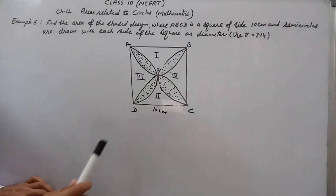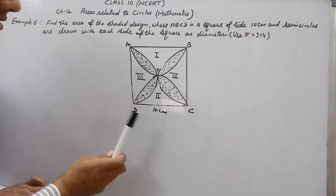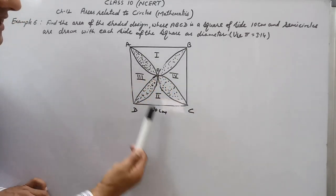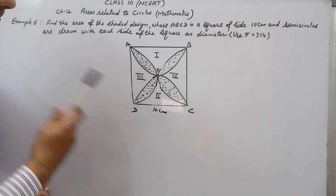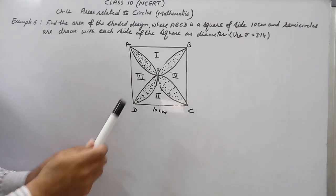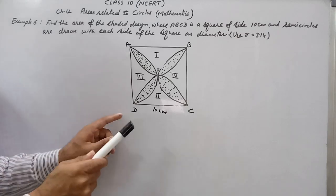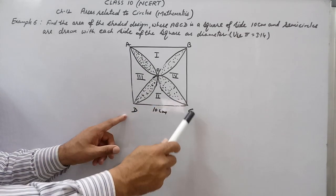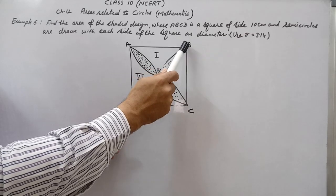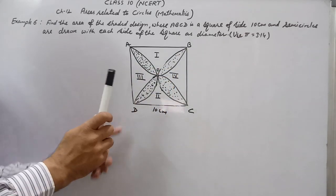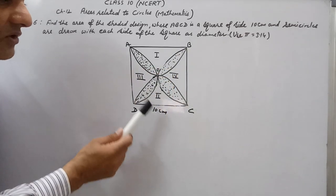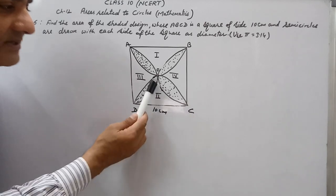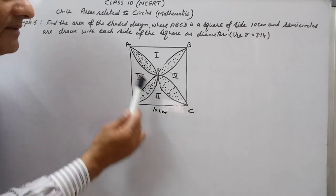In this question we have to find out the shaded area. ABCD is a square with side 10 centimeters, and four semicircles are given: AOD, DOC, COB, and BOA. The radius of each semicircle is half the side of the square, that is 5 centimeters.